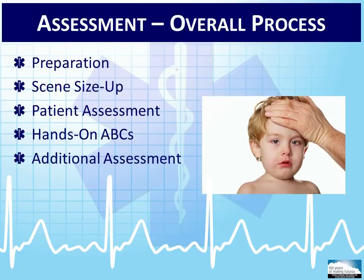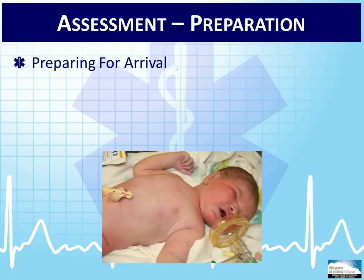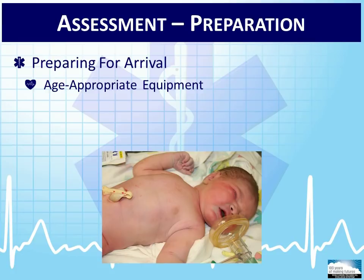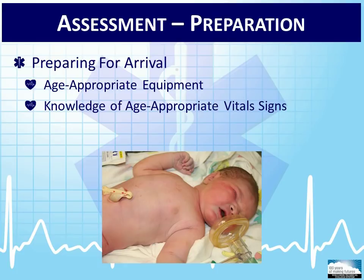Most EMS professionals do not see a large pediatric emergency call volume. Part of our professional responsibilities is to have an in-depth understanding of this population's characteristics, physical attributes, and cognitive development. There are many resources an EMT can utilize to prepare for pediatric encounters, such as visiting or volunteering at daycare facilities and schools, babysitting, or spending time with the boy or girl scouts. Ambulance services in Wisconsin are required to carry specialized pediatric equipment that should be reviewed on a regular basis. Regular review of normal age-appropriate vital signs and presentations should be part of your continuing education.